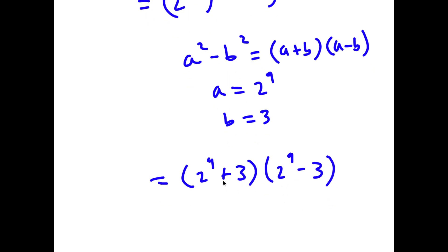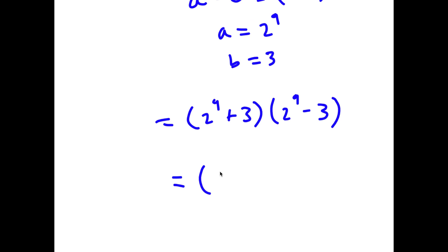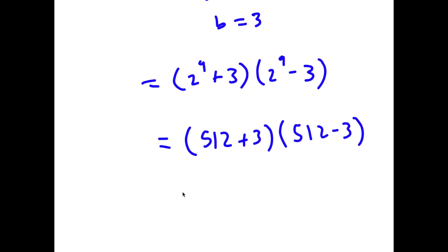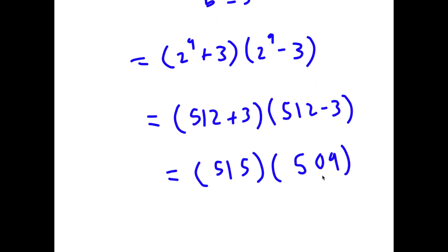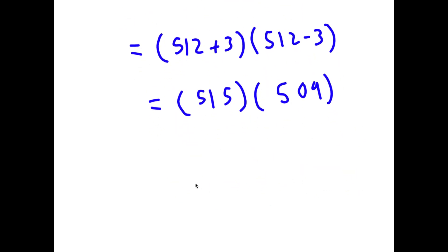2 to the power of 9 is 512, so I'm doing 512 plus 3 times 512 minus 3. Now 512 plus 3 is 515 and 512 minus 3 is 509, so I have 515 times 509. You may be tempted to use a calculator to multiply these two, but we're going to use a trick to solve this on paper.